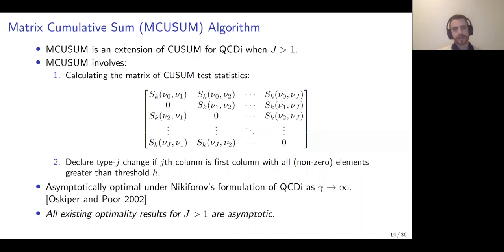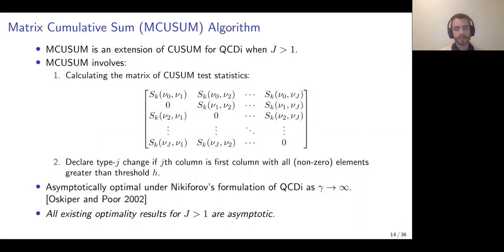It is important to highlight that all optimality results — all algorithms known to solve Nikiforov's formulation of QCDI — are only known to do so in the asymptotic regime, as the mean time to false alarm or false isolation constraint goes to infinity. That is obviously the regime where we'd like to operate these rules, so it's not an entirely practical limitation, but it is worth noting the limits of the theory in this somewhat idealized case.